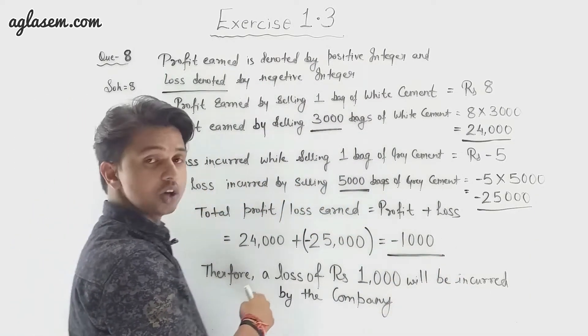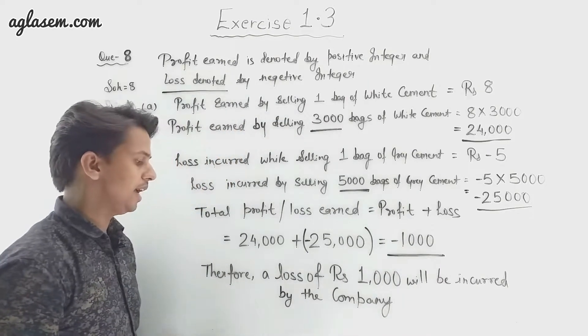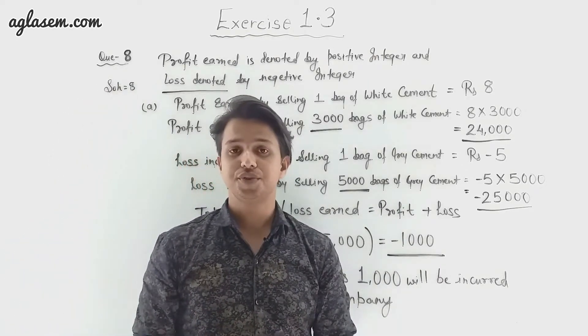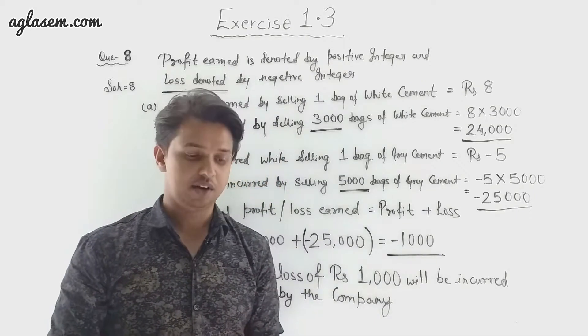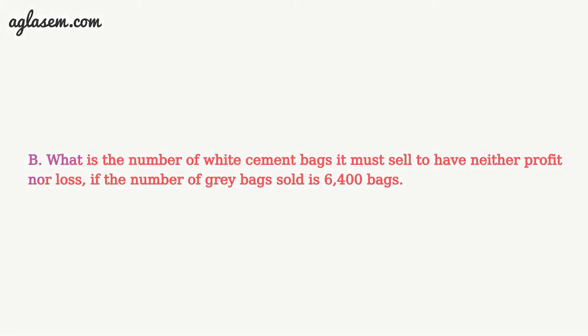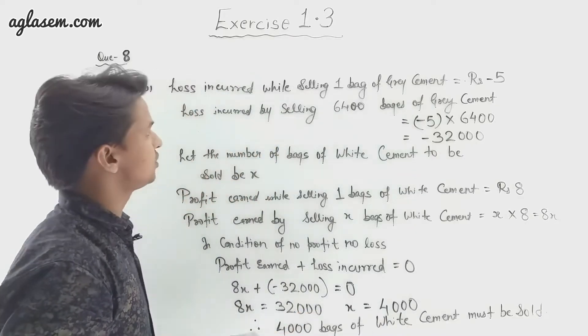Therefore, a loss of rupees 1,000 will be incurred by the company. Now moving to Part 2 of Question 8: what is the number of white cement bags the company must sell to have neither profit nor loss, if the number of grey bags sold is 6,400?